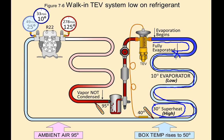The refrigerant boils off and changes state way too early, and then it just begins to pick up superheat, which doesn't give us any cooling whatsoever. So on the evaporator side we have low evaporator temperature because the lack of refrigerant lowers the pressures, and with that pressure-temperature relationship, when the pressure goes lower, so does the temperature. Then we have high superheat because there's not enough refrigerant in the system — the evaporator is starving, and that starving evaporator causes higher superheat.